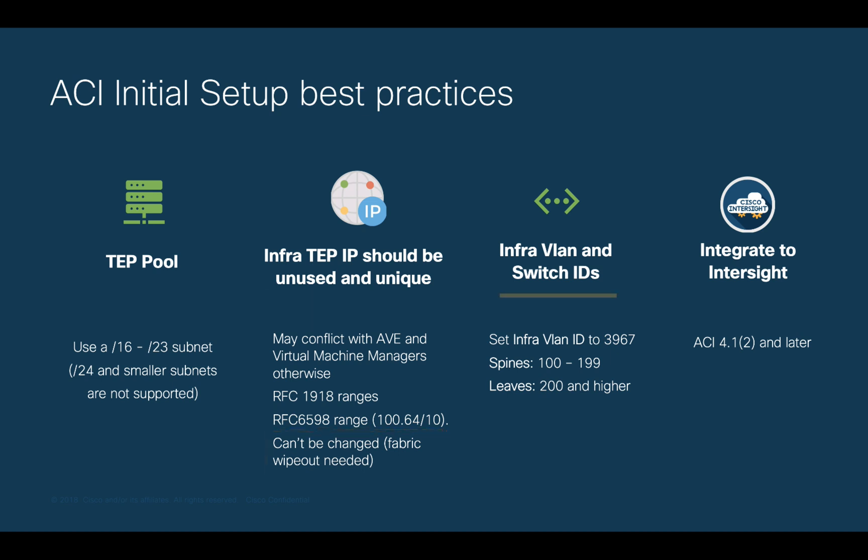Third, for the infrastructure VLAN ID, please use a VLAN ID that does not conflict with any reserved VLAN in your environment, so that you can extend it freely, especially for AVE and other scenarios that may require it. Using VLAN 3967 has been considered a safe pick and best practice, so use it if you can.